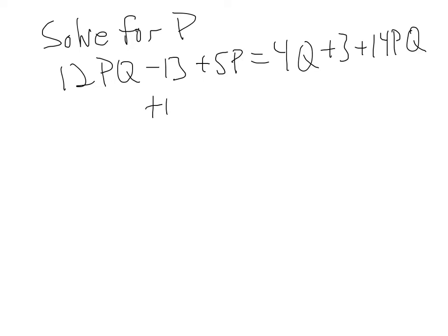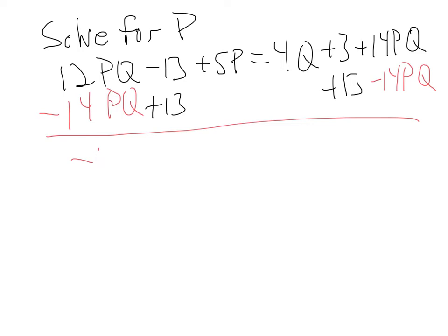So, I'm going to add 13 to both sides. And I'm also going to - I'm going to leave that 5p alone. I'm going to bring this 14pq over here. I'm going to subtract 14pq from both sides. Unfortunately, there's already a pq term. So, I'll just line that up. That leaves me negative 2pq. 13 is gone. I've got the 5p. On the right-hand side, I've got 4q plus 16. So far, so good.